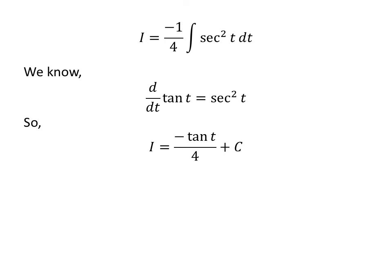So from the above derivative we can conclude tangent of t is the antiderivative of square of secant of t. So I is equal to minus tangent of t upon 4 plus capital C. Capital C is the arbitrary constant of indefinite integral. Never forget to add this constant at the end of any indefinite integral.